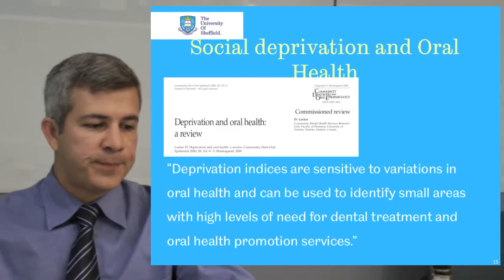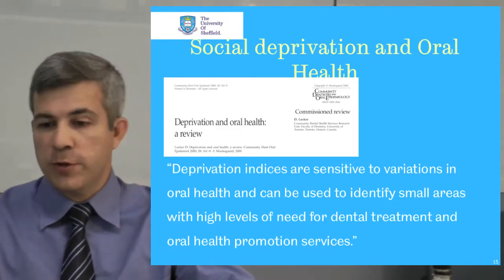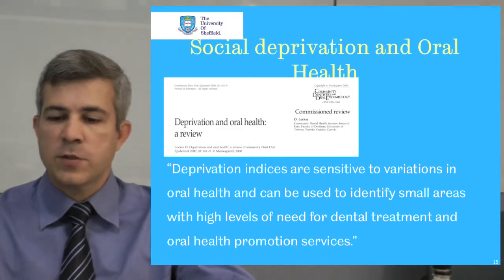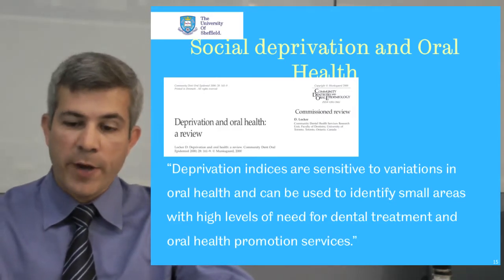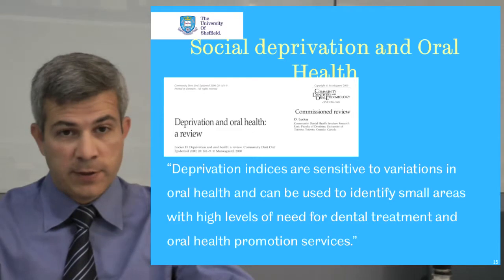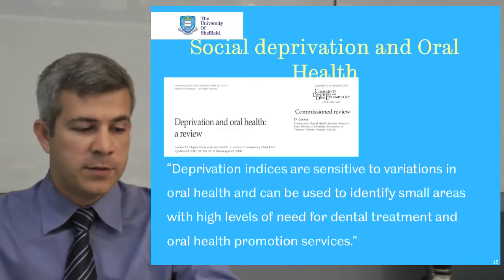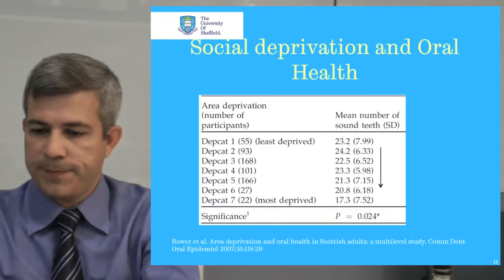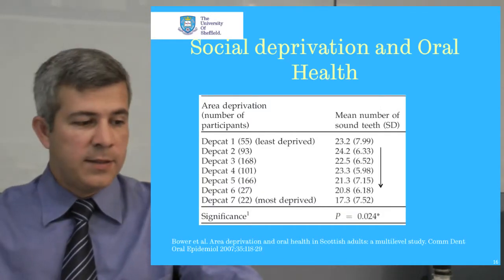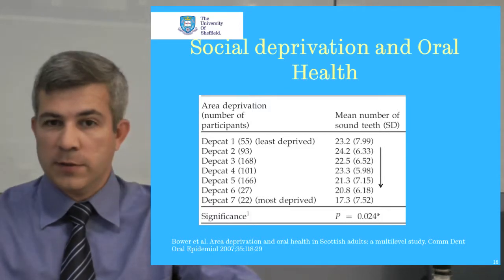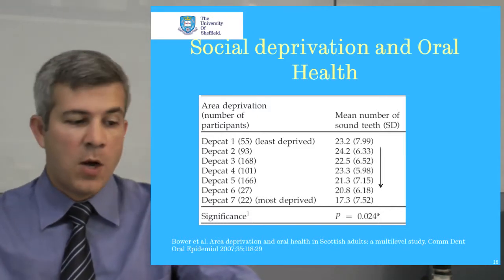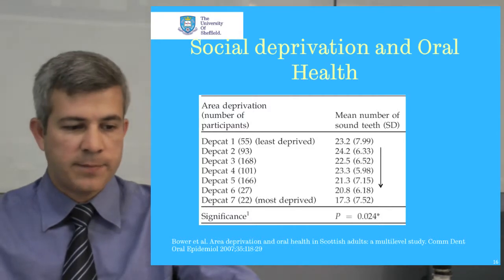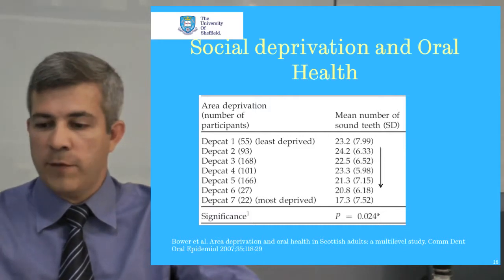Turning to oral health, Locker's review article on social deprivation and oral health concluded that social deprivation indices are sensitive to variations in oral health and can be used to identify small areas with high levels of need for dental treatment and oral health promotion services. A study on social inequalities in oral health in Scotland showed a clear gradient between area deprivation and number of sound teeth — on average, people living in the poorest areas had six fewer sound teeth than those living in more affluent areas.